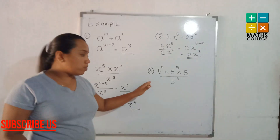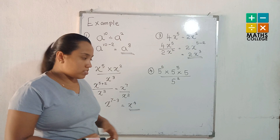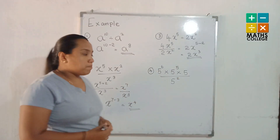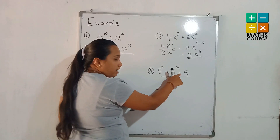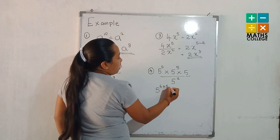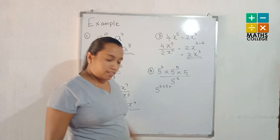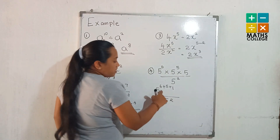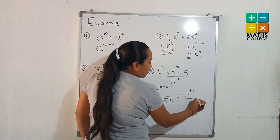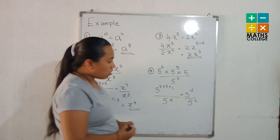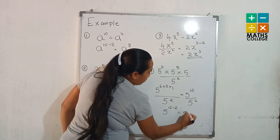The fourth question also has product and division combined. First, do the product step — add the same-basis indices: 6 plus 5, and noting that a term with no written index has index 1, gives 6 + 5 + 1 = 12. So the numerator is 5 to the power 12, divided by 5 to the power 2. Applying the second law of indices, subtract 2 from 12. The answer is 5 to the power 10.